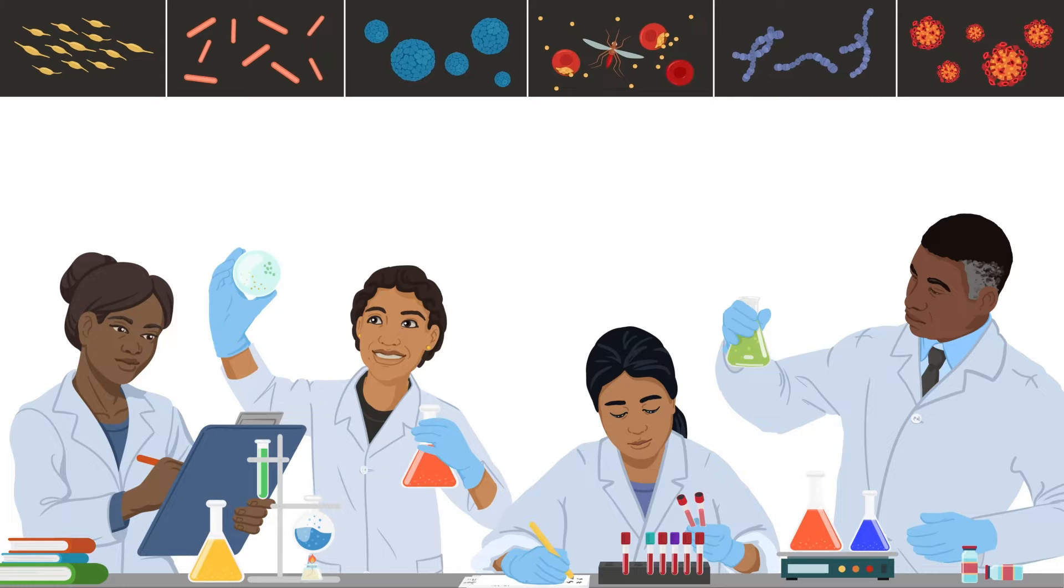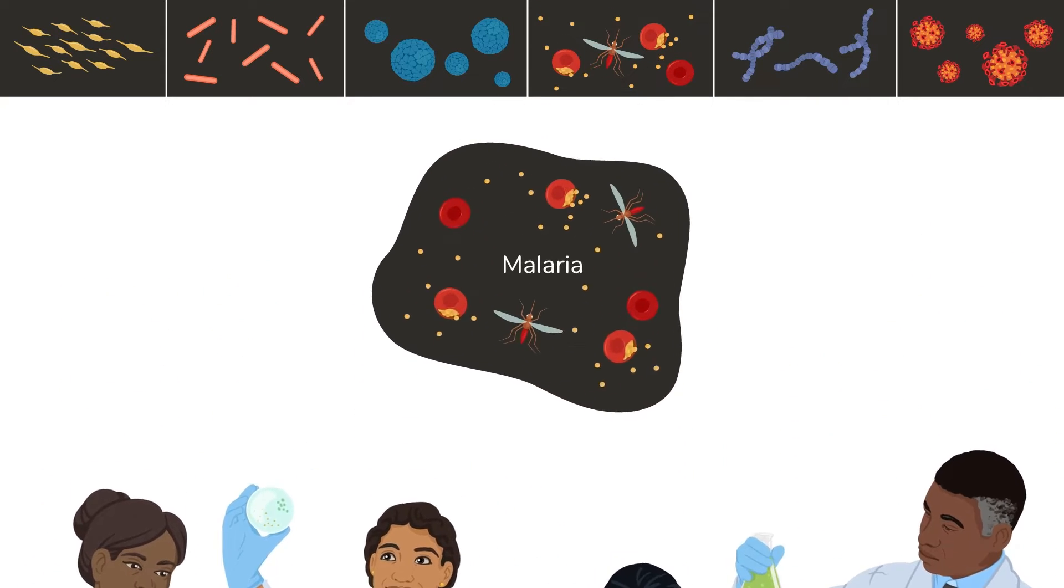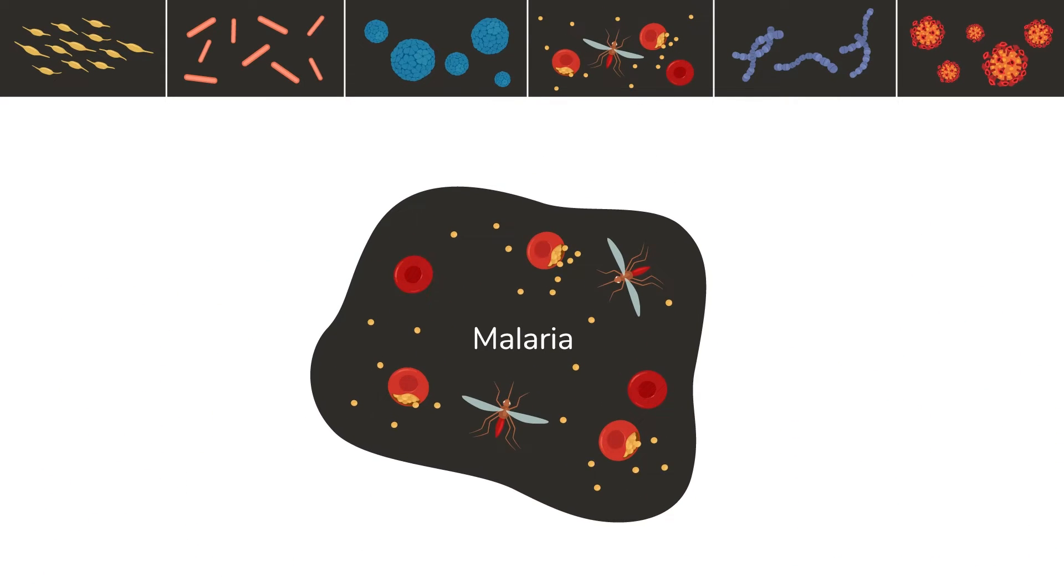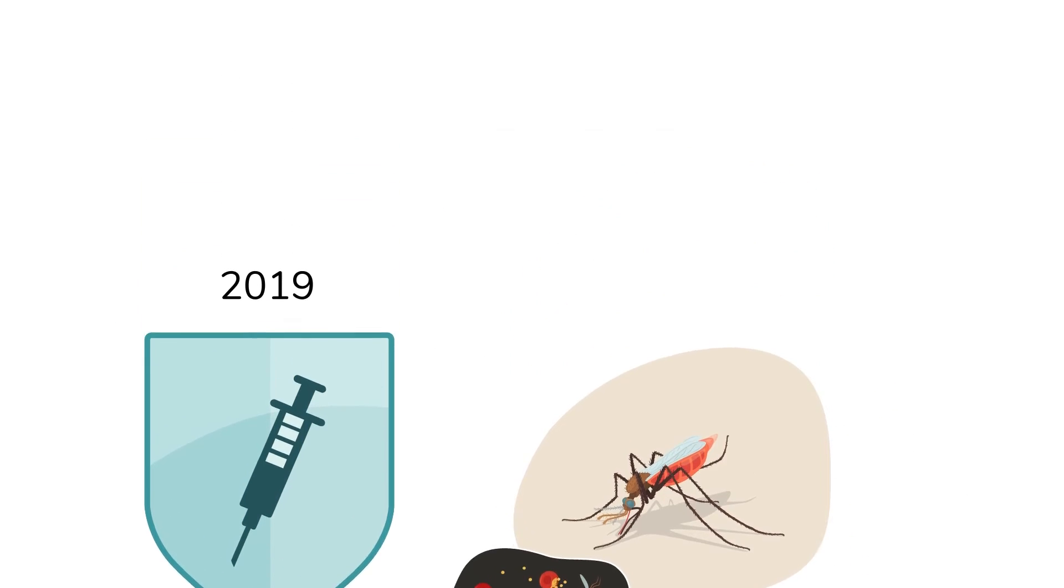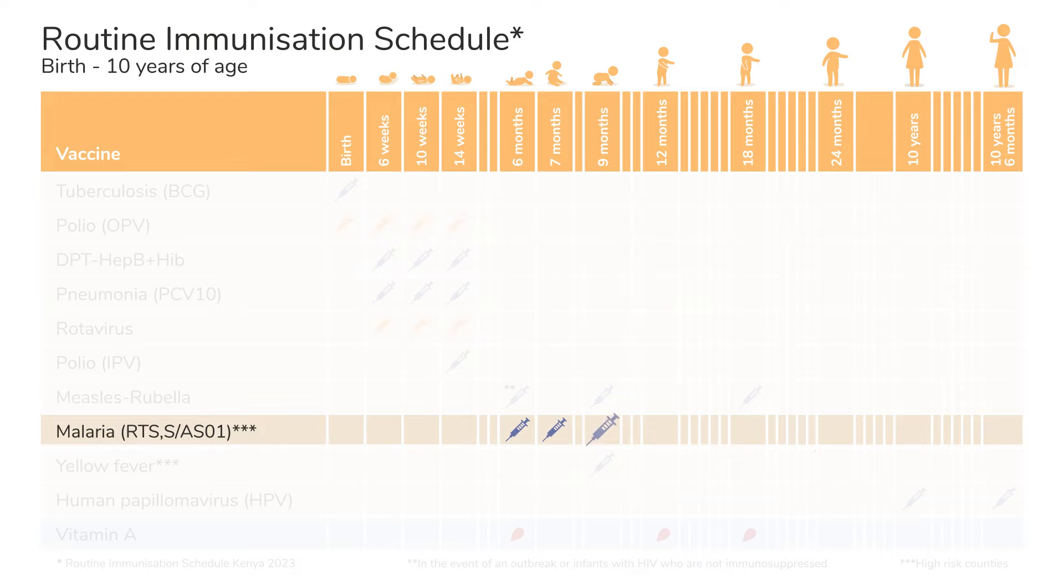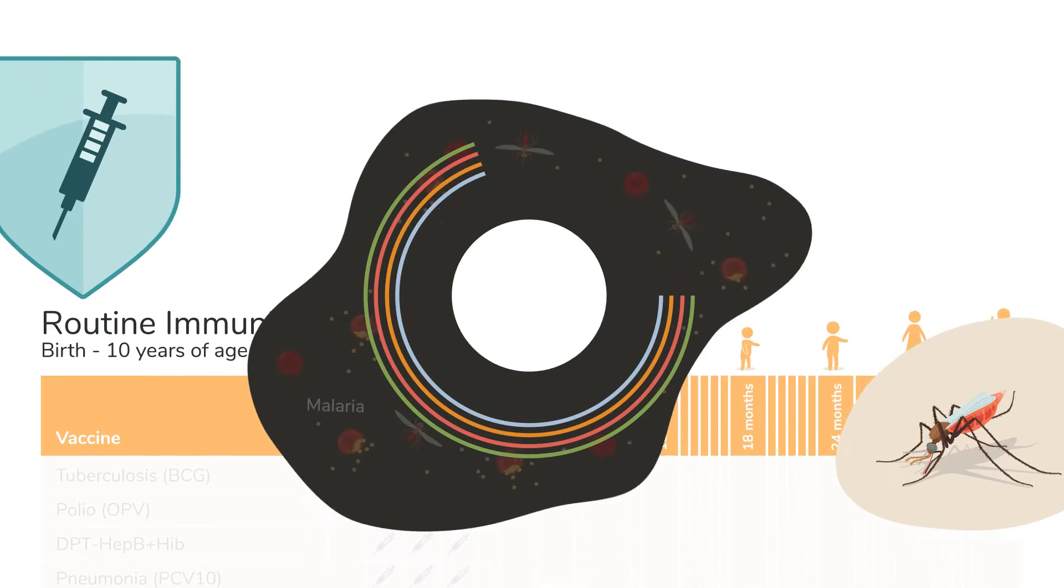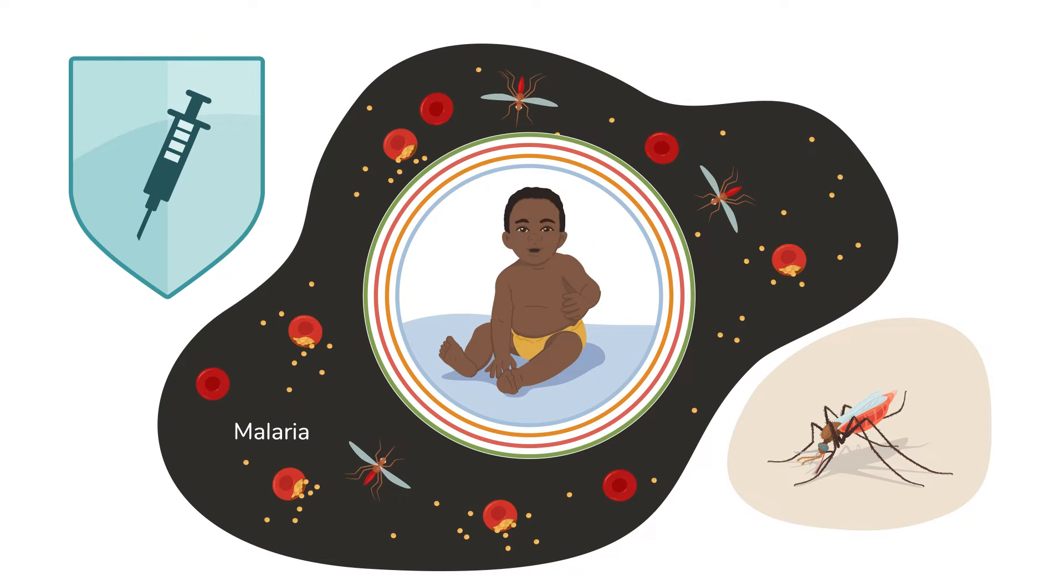For instance, did you know that the vaccine to protect children from dying from malaria took many years to develop? They wanted to make sure that it was both safe and effective before recommending that all children receive it. And now we have a way to protect children from dying from malaria.